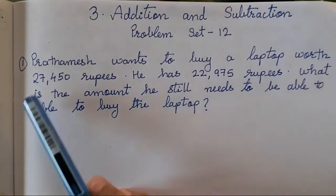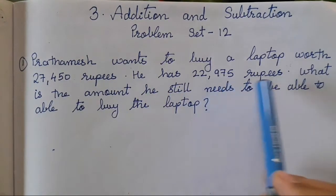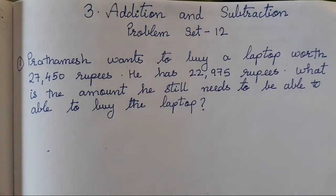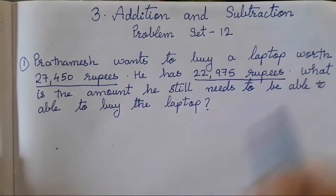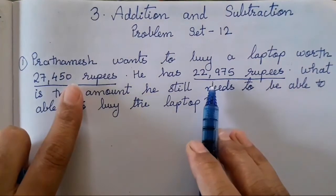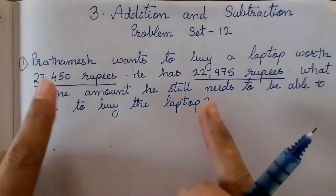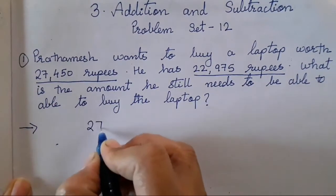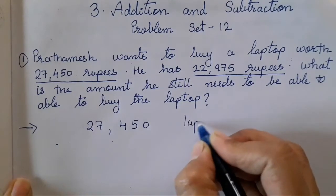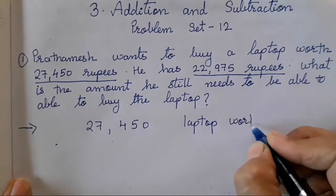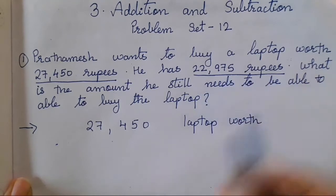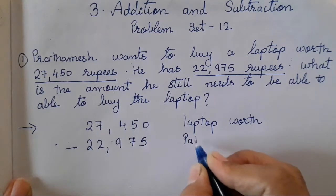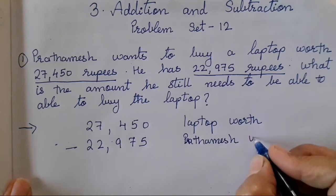Prathamesh wants to buy a laptop worth Rs. 27,450. He has Rs. 22,975. What is the amount he still needs to be able to buy the laptop? So this much is the laptop price, and Prathamesh is having this much amount. You all have to find the difference — what is the amount that is needed to make up this total? So I will explain with the sum. The laptop is of 27,450 and Prathamesh is having Rs. 22,975. They say you all have to find the difference between the two amounts.